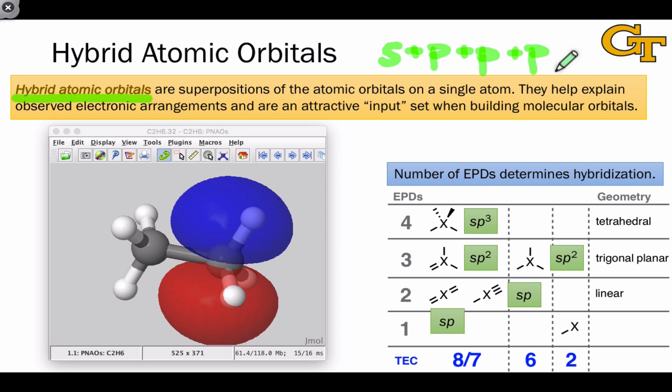Or even fractional numbers of them, as we'll see later, and out pops a combined atomic orbital that makes sense in light of the geometries we actually observe. The number of electron pair domains around an atom, not counting those involved in resonance, as we've already seen, determines the hybridization of that atom.